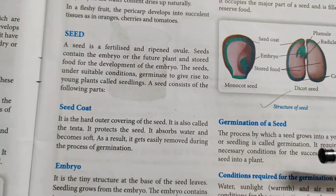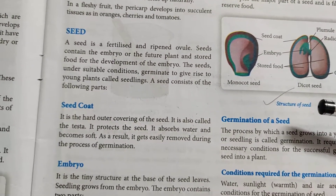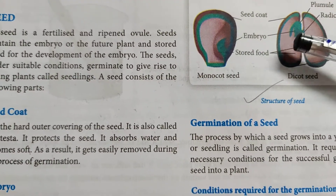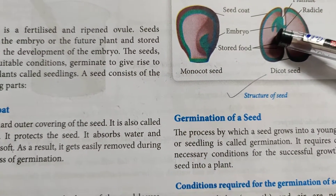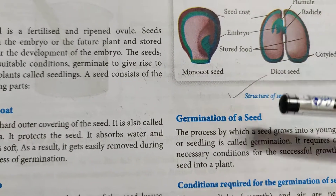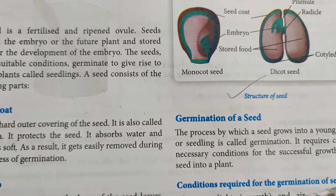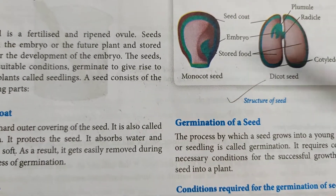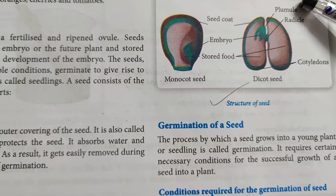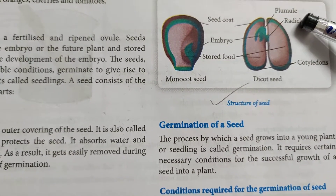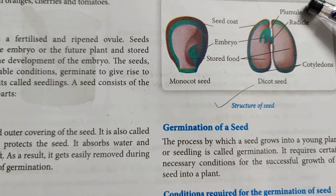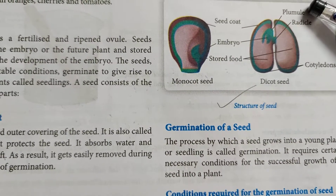Next is the embryo. Embryo is a tiny structure at the base of the seed leaves. Seedlings grow from the embryo. The embryo contains two parts: radicle and plumule. Radicle develops into roots after germination, and plumule grows into the shoot after germination.